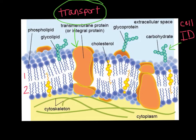We also have cholesterol — these cholesterol molecules, another type of lipid. Cholesterol is responsible for helping to stabilize the plasma membrane. We find cholesterol in animal cells, and it makes the membrane a little bit less fluid, which is important. So these are the main structures of your plasma membrane, which we find — remember — in all cells: prokaryotes and eukaryotes.